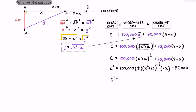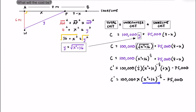Simplifying the first term: 100,000 × (1/2) × 2X = 100,000X, multiplied by (X² + 36)^(−1/2). Rewriting the negative exponent back in radical form, the derivative becomes C'(X) = 100,000X / √(X² + 36) − 75,000. We set this derivative equal to zero to find the critical point that minimizes cost.